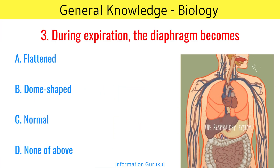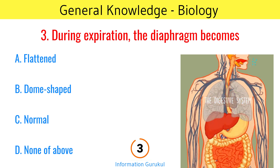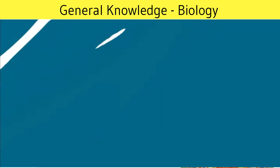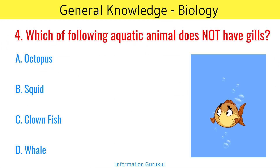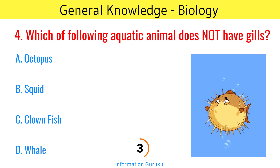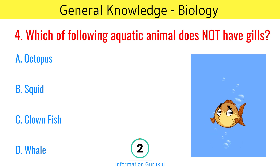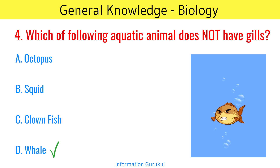During expiration, the diaphragm becomes dome-shaped. Which of the following aquatic animals does not have gills? Whale.